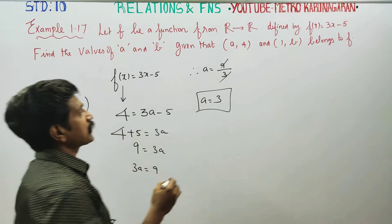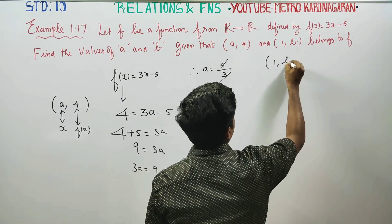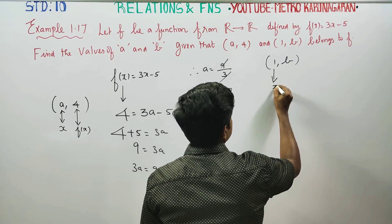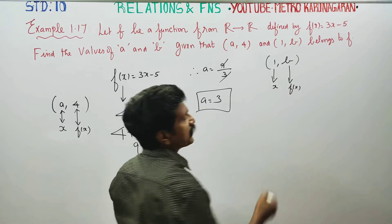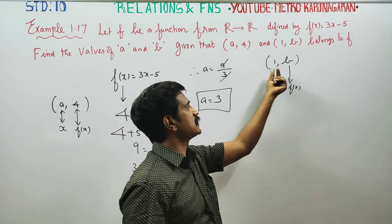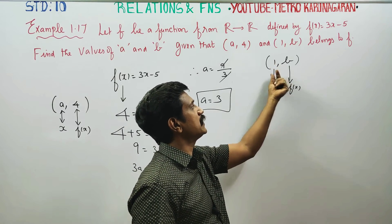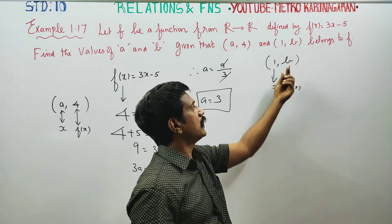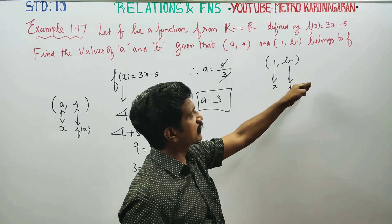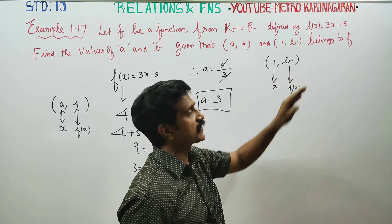This is the value of A. Now for (1, B), this is x and f(x). The first element is always the element, and the second is the image.